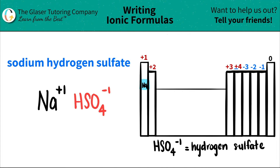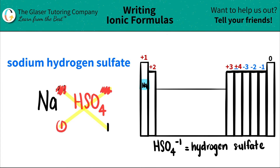Now we have the two components. So all we do is we crisscross the charges to get the subscripts and see how many of each we need. So this plus one crisscrosses down, telling me that I need only one of the hydrogen sulfate. This negative one crisscrosses down, telling me that I only need one of the sodium. When you do this crisscross, don't worry about the charges anymore — you're just focusing on these numbers.